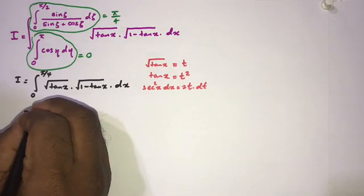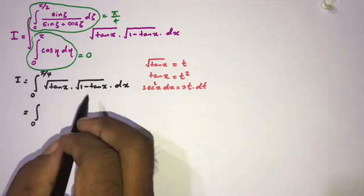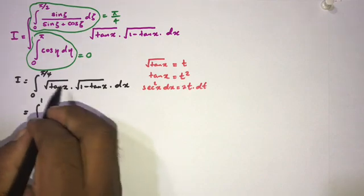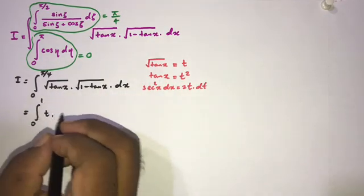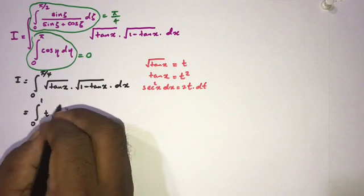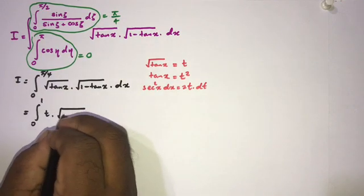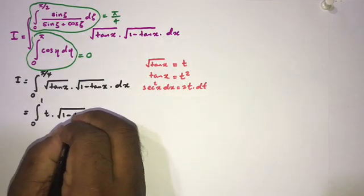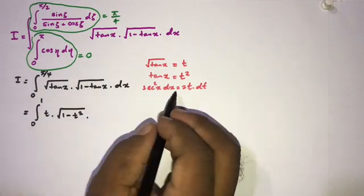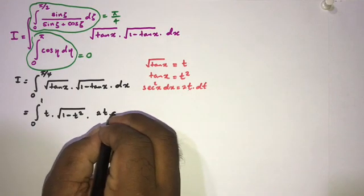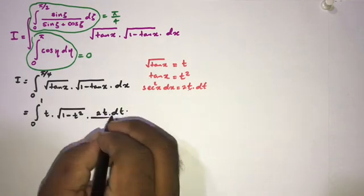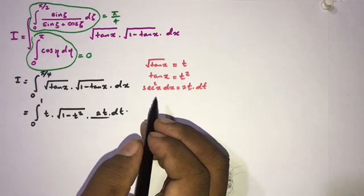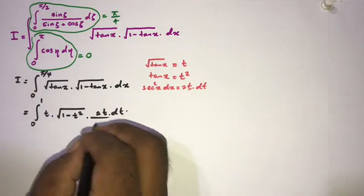Now we substitute the limits. The lower limit is 0. When x approaches π/4, t approaches 1. So square root of tan(x) is t, and square root of (1 minus tan(x)) becomes square root of (1 minus t²). Now dx equals 2t dt over secant squared of x, and secant squared of x equals 1 plus tan²(x), which is 1 plus t⁴.